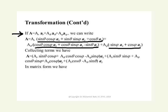Then we collect the terms multiplying the unit vector in the X direction AX, terms multiplying AY, and terms multiplying AZ, and you end up with this expression. A word of warning: A_R will be given to you as a function of R, theta, and phi. So to complete your transformation, you have to convert these components — which are functions of R, theta, and phi — to functions of X, Y, and Z.